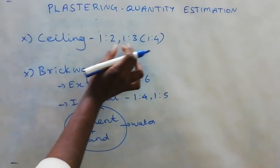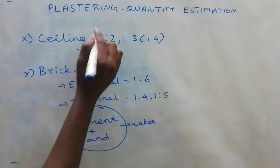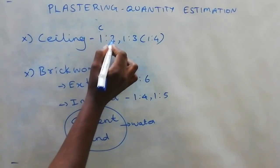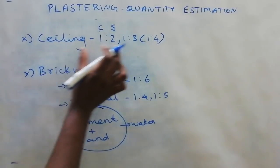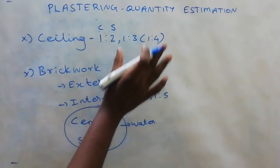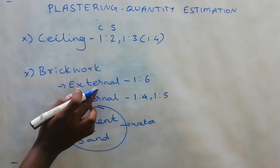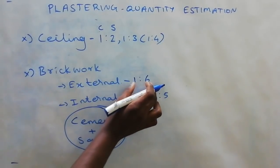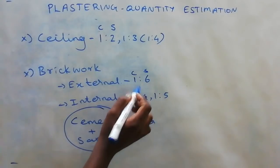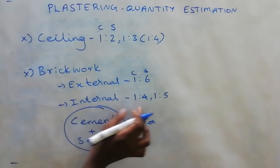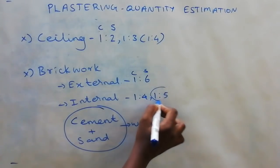The ratios we will consider are 1 is to 2, 1 is to 3, and 1 is to 4. For cement, we use 1 is to 4, and also 1 is to 6 for cement ratio.